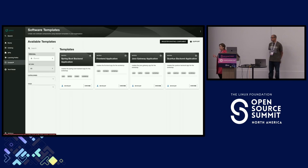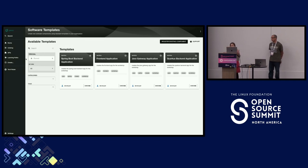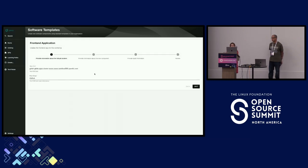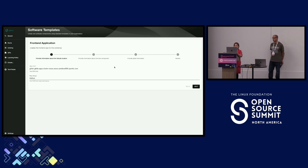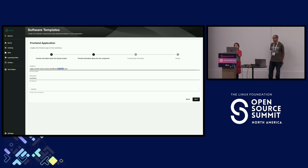Let me create a few with you. I'll create a front-end application. There are four steps — three where I provide input, and the last is a review. First, I provide the GitLab host and organization group where I'm putting everything, as well as the cluster API where my application will be built and deployed.